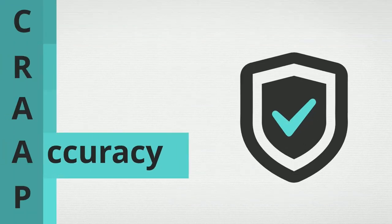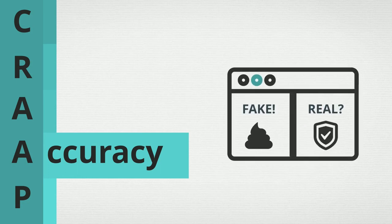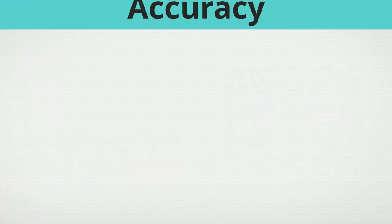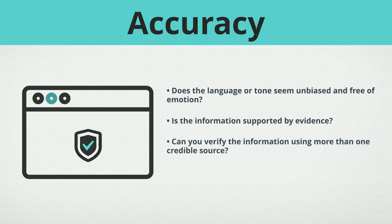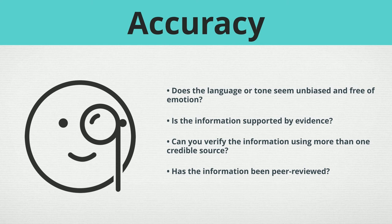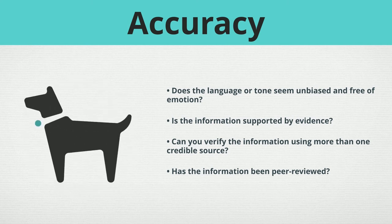Accuracy. How true is this information? Accuracy is a hot topic these days — there's a lot of confusion over what is fake and what is real. When checking for accuracy, ask yourself: does the language or tone seem unbiased and free of emotion? Is the information supported by evidence? Can you verify the information using more than one credible source? Has the information been peer-reviewed? Peer review is the evaluation of a work by other experts in the same field who check the work and research prior to its publication. The peer review process is important because it serves as quality control. The experts reviewing the work don't just fact-check — they also check for clarity and methodology. If the work involves people or animals, the peer review may even check for ethical or safety concerns.